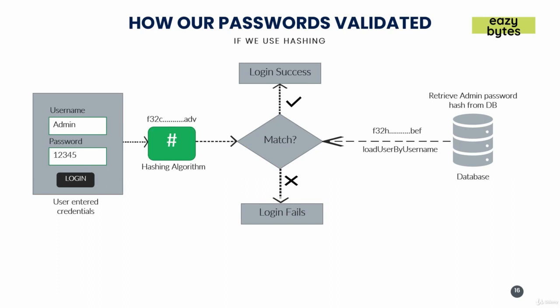Spring Security will then try to pull the details from the database using the username of the user and retrieves the already hashed password of '12345'. You can see the hash value generated from the value provided by the user, and the hash we maintain in the database — though they look different, they are the hash values of the same text '12345'. In this scenario, the hash value from the database and the hash we calculated are equal.